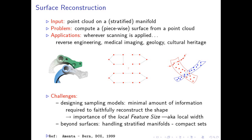Here is an example: a point cloud sampled on a mechanical part, and one wishes to reconstruct it. Topologically, this is a torus with two holes. The key challenge is to design sampling models which specify how much information is needed to faithfully reconstruct the shape. For example, with a point cloud of size 10, should we output two polygons or a single polygon? This is an ill-posed problem without sufficient information. We wish to design sampling models allowing one to infer sufficient conditions to faithfully reconstruct shapes.